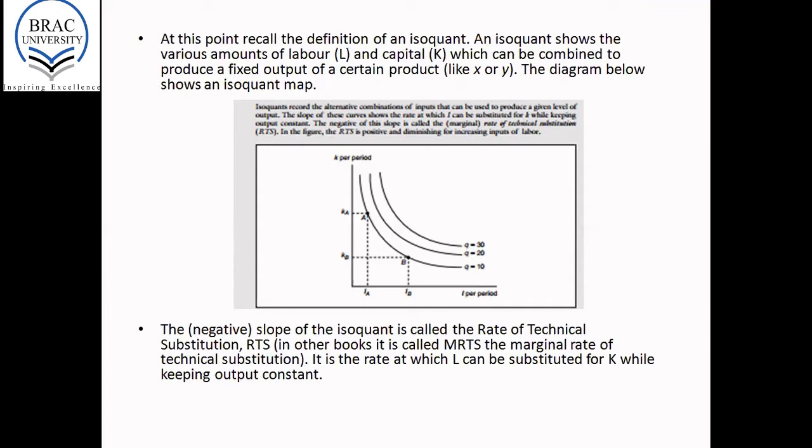The slope of the isoquant is called the rate of technical substitution, RTS. And it is the rate at which L can be substituted for K. Labor can be substituted for capital while keeping output constant. So as you move along the labor axis, the horizontal axis, as you move from left to right, the slope of the isoquant tells you at what rate you can substitute labor for capital.